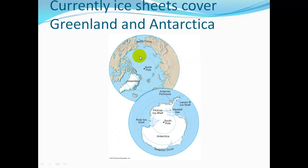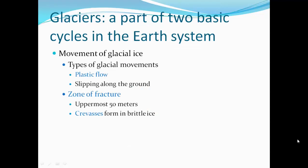Here's a diagram showing a continental glacier over Greenland and another over Antarctica. Now, how glaciers move — there are two types of movement. There's plastic flow, where the glacier moves in a very slow, viscous movement, or slipping along the ground, where pressure builds up and they slip a little bit, then pressure builds up again and they slip again.